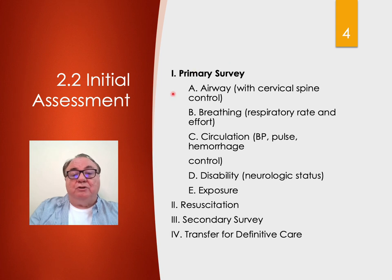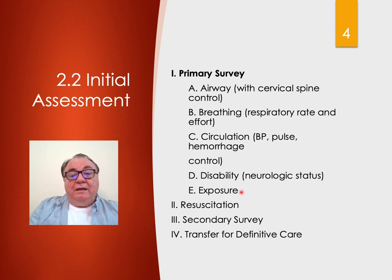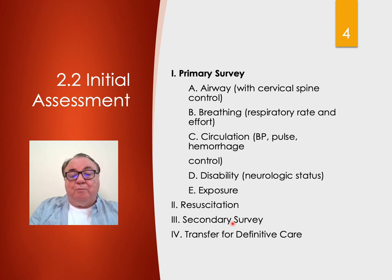In the primary survey: airway with cervical spine control, breathing with respiratory rate and effort, circulation with blood pressure, pulse, and hemorrhage control, disability for neurological status, and exposure to look at the entire patient. Simultaneously with the primary survey is resuscitation. Following this is secondary survey, which is basically a complete physical examination, and your final step is transfer for definitive care.